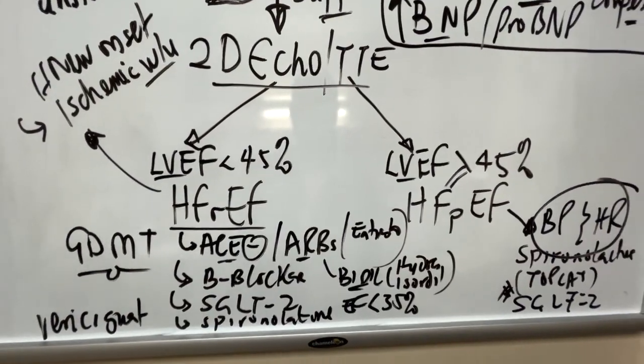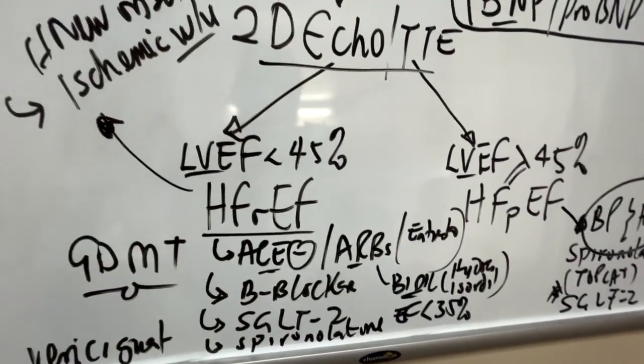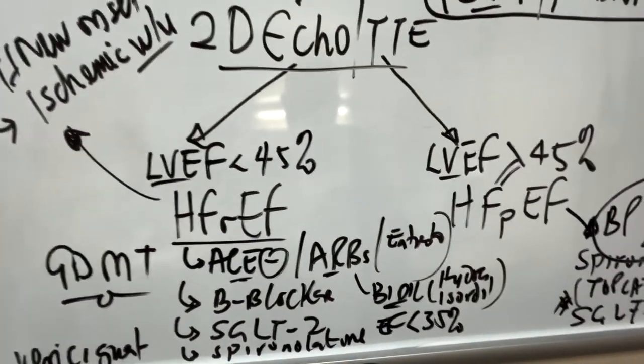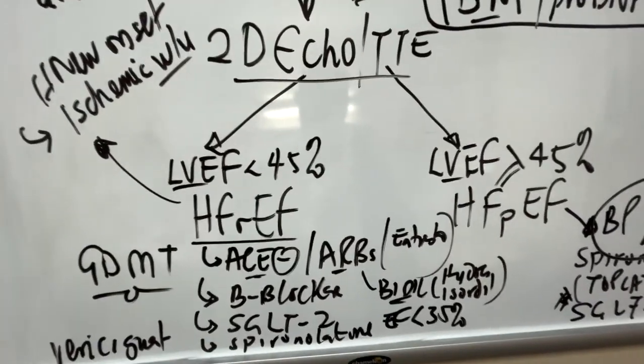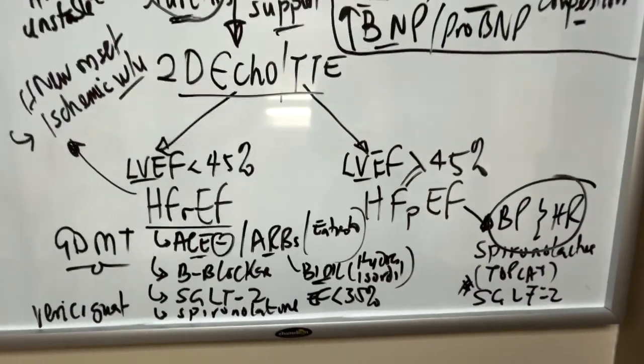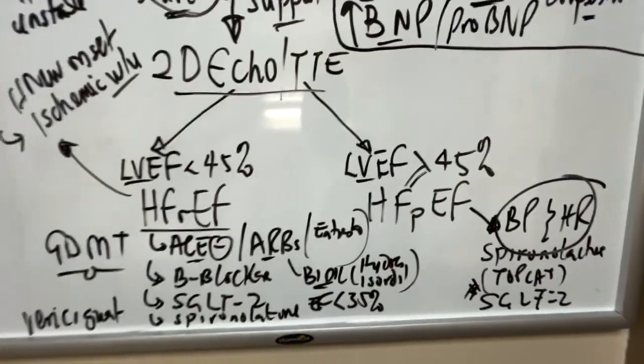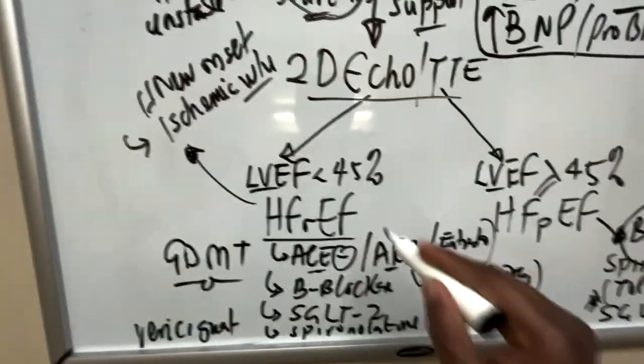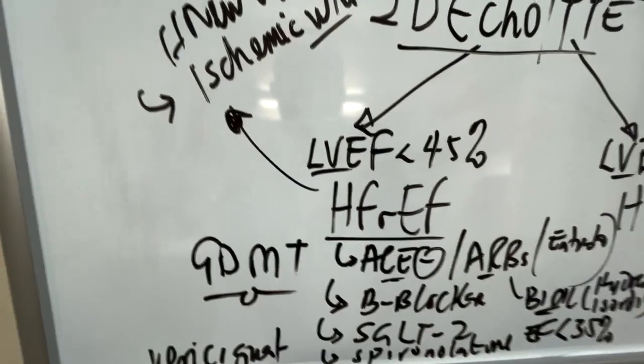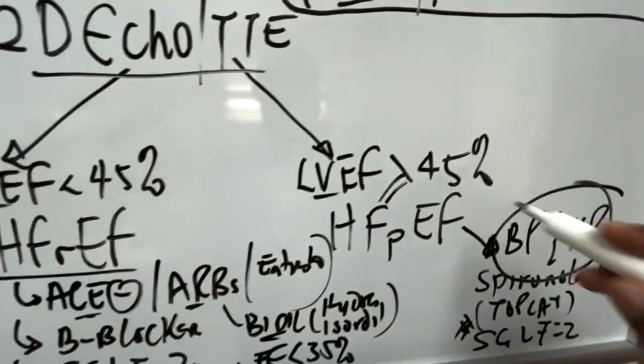Left ventricular ejection fraction lower than 45% will be tagged heart failure with reduced ejection fraction. I'm using 45 here because some places use 40, which I feel is very confusing with intermediate and improved terminology. Practically in clinical medicine, it's difficult to make decisions with those terminologies, so 45 is a good number. Less than 45 is HFrEF, 45 and up is HFpEF.